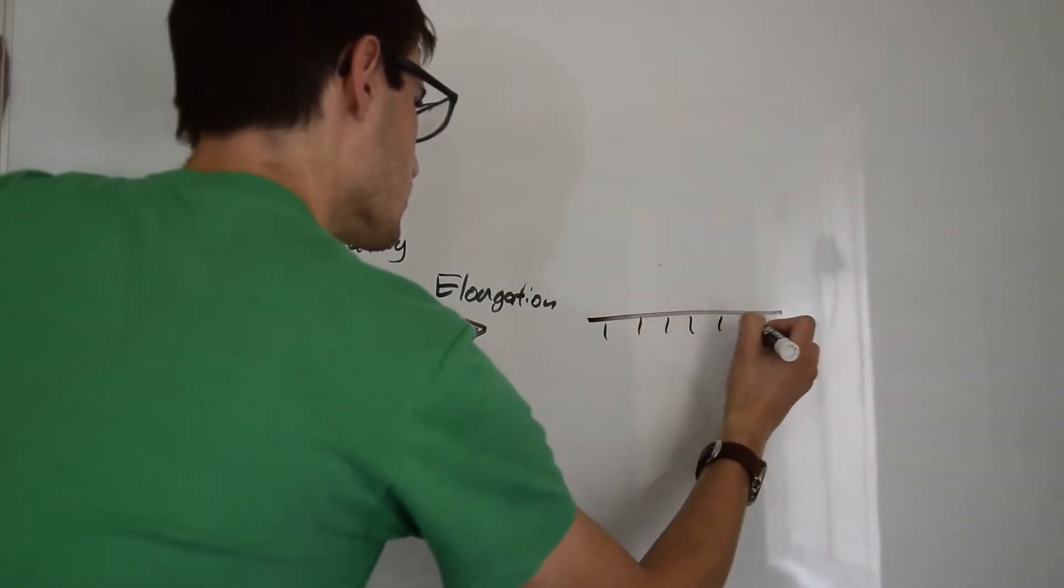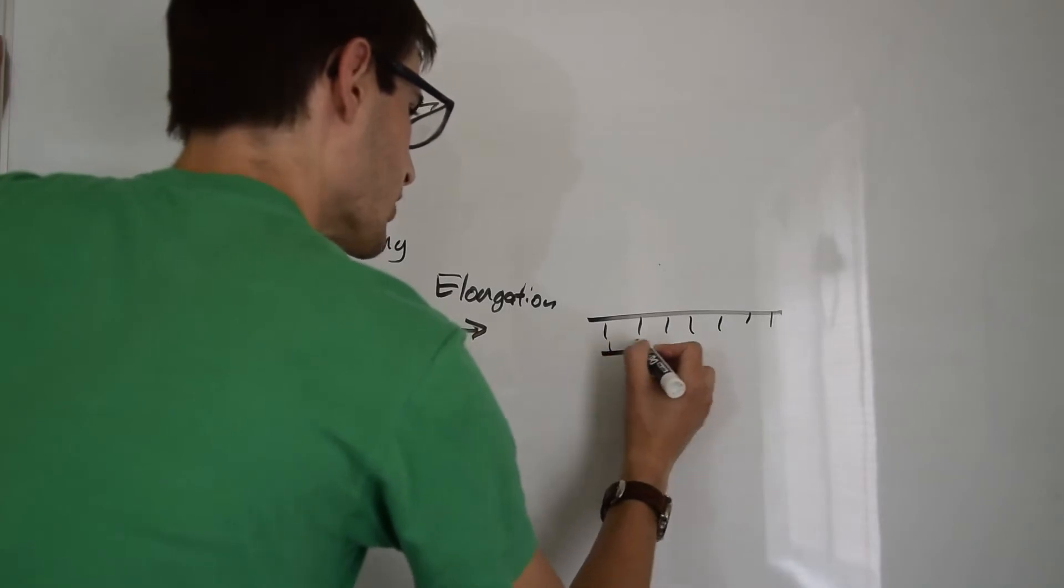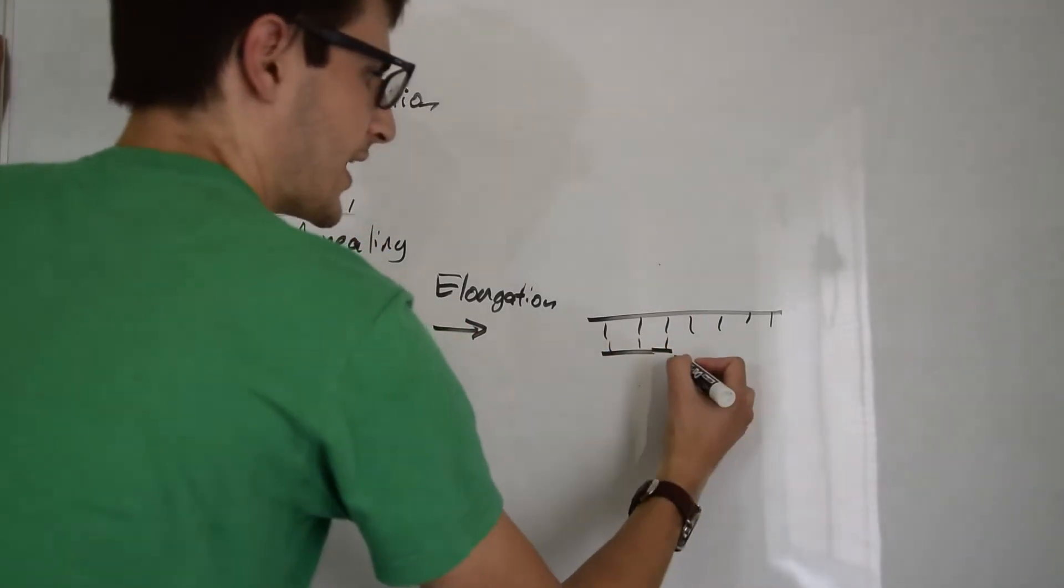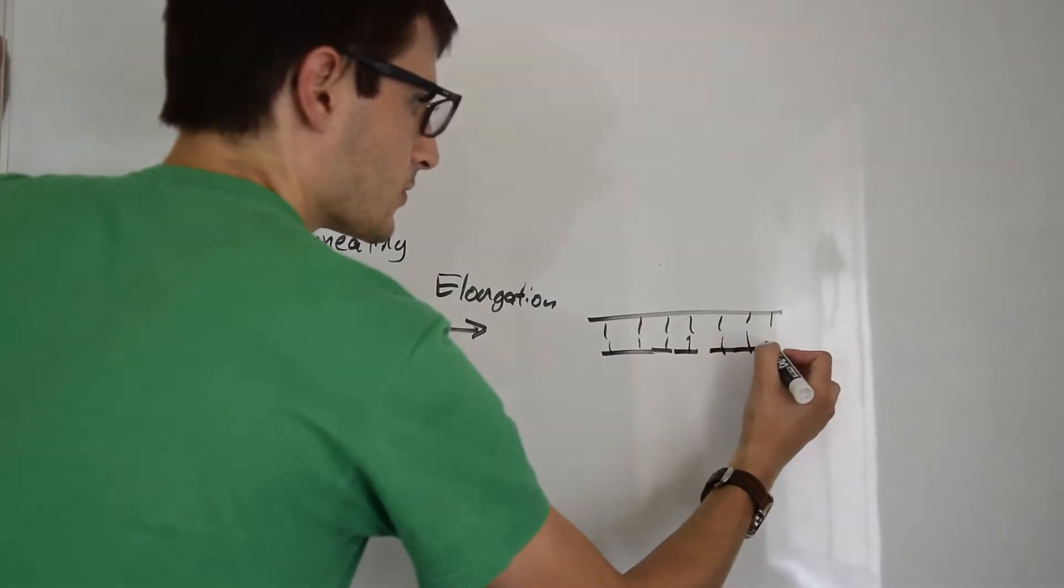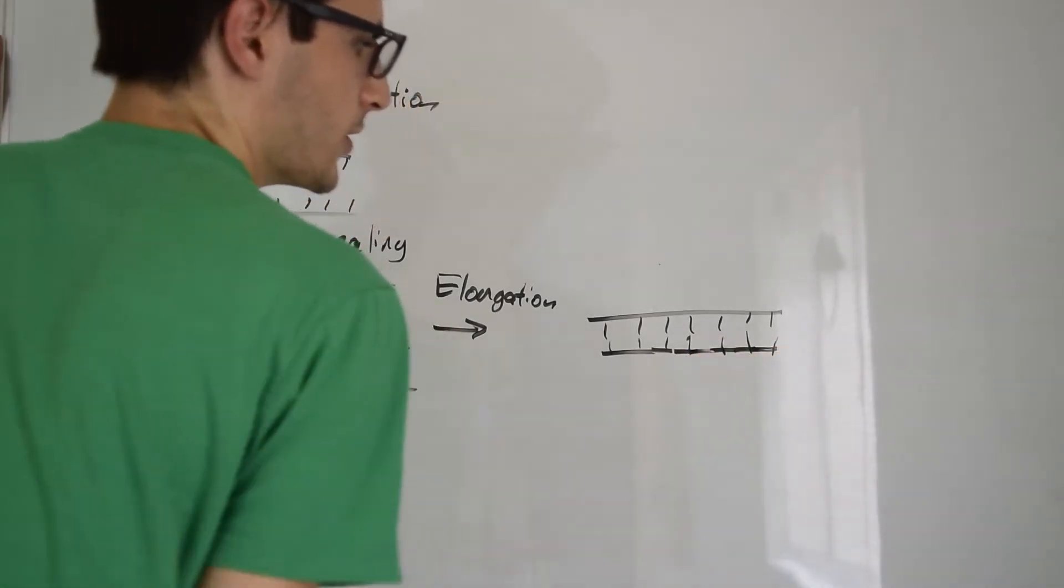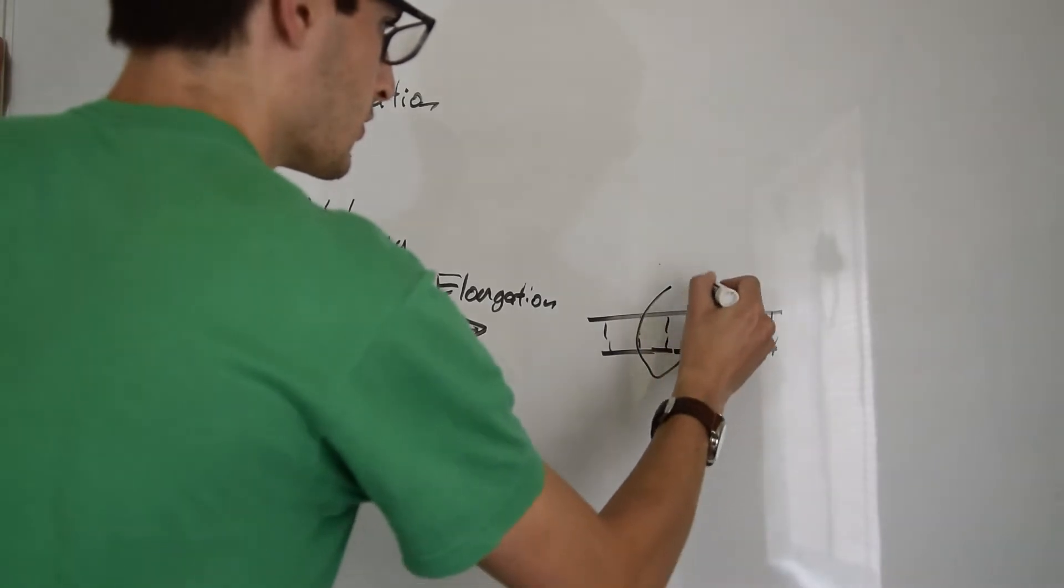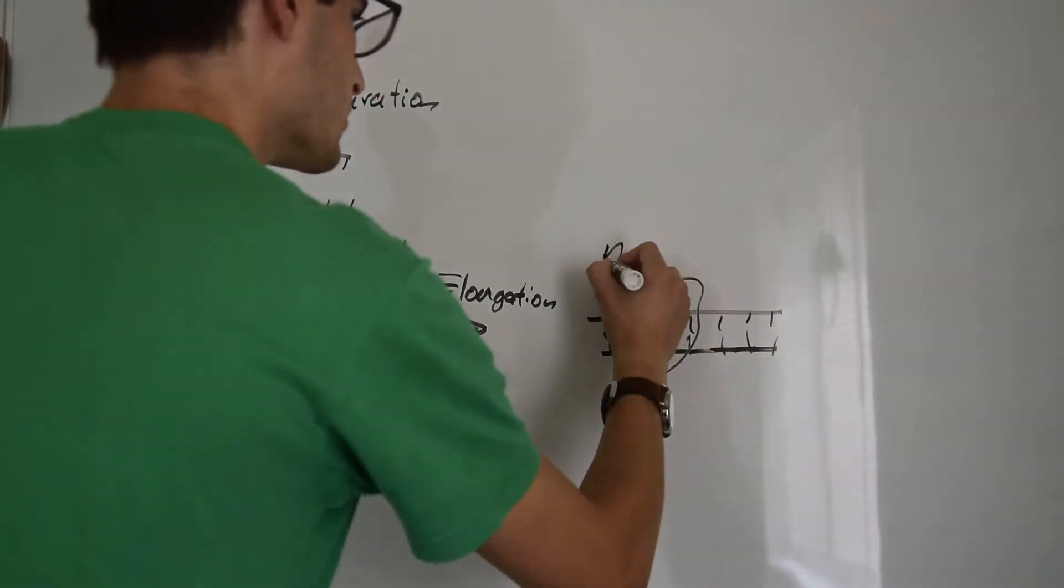This is the DNA polymerase enzyme. It's much more complicated looking than this, but it will move along the DNA from 5 prime to 3 prime as it replicates. Remember that we started off with two strands, and so both of those get replicated into their own double-stranded DNA.